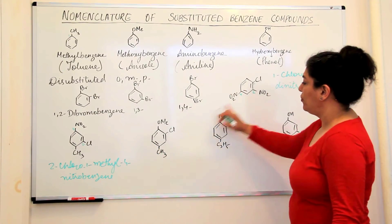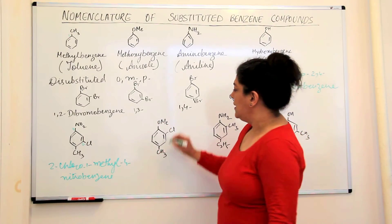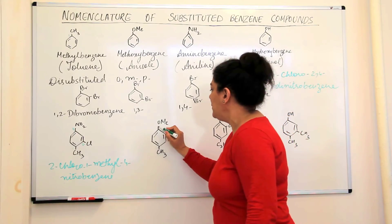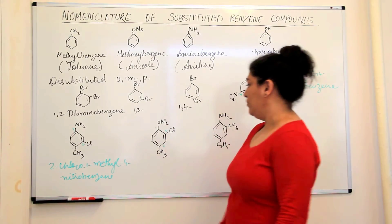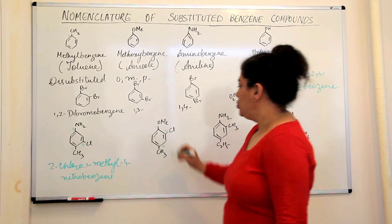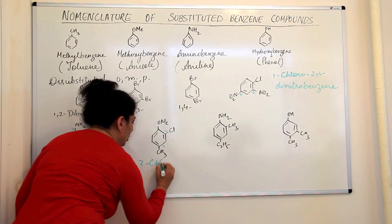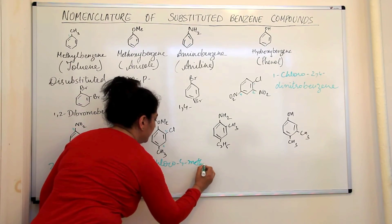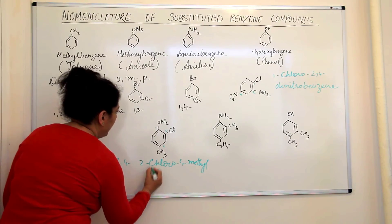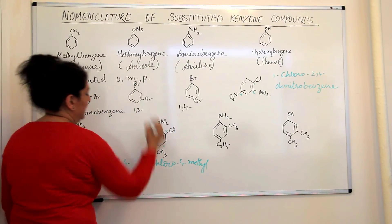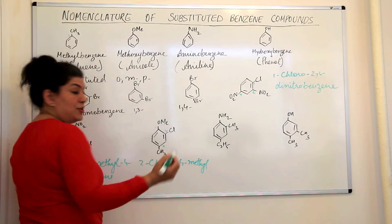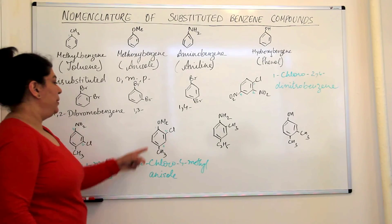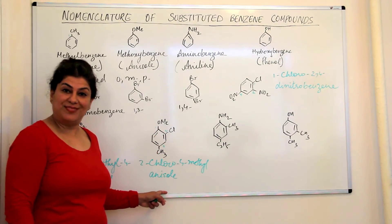So, let us do two of these. Yes, three of these. This is O-M-E, it means it's an anisole. So, if this O-M-E is 1, this should be 2 and this should be 4. So, it would be 2-chloro-4-methyl anisole. Am I clear?